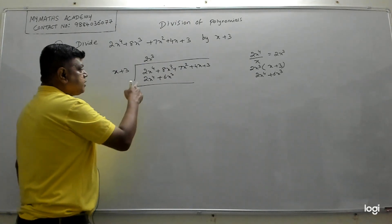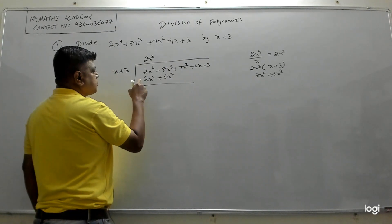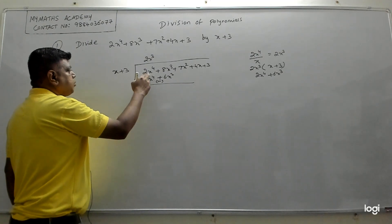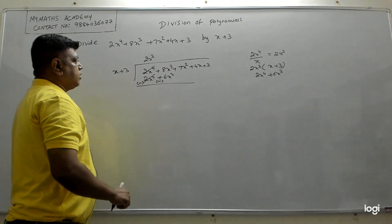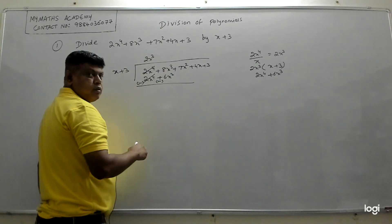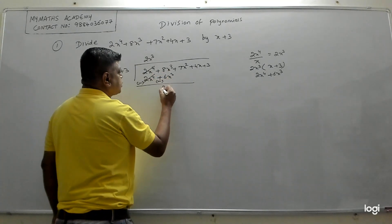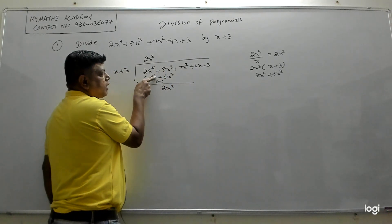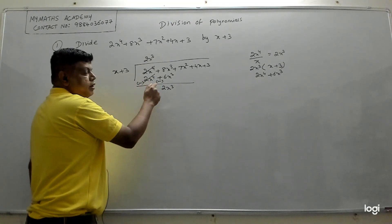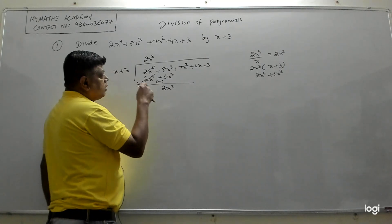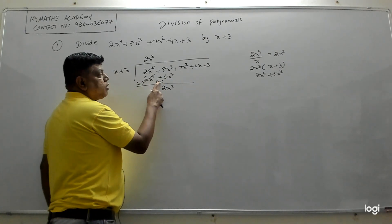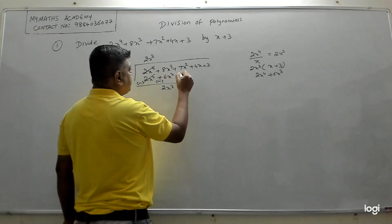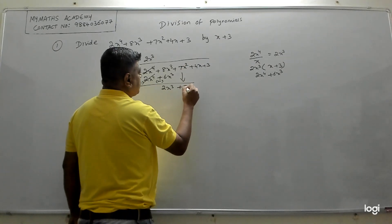Now we subtract, so we change the sign of the polynomial we got. This plus becomes minus, this plus becomes minus. So 2x⁴ − 2x⁴ cancels. Then 8x³ − 6x³ = 2x³. Bring down the next term: + 7x².